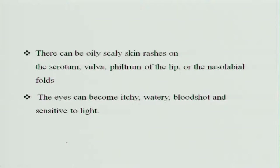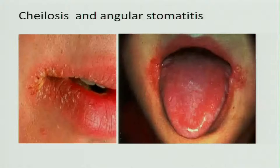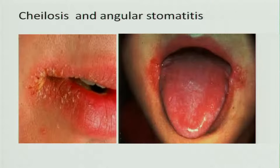There can be oily, scaly skin rashes in the scrotum, vulva, philtrum of the lip, and the nasolabial folds. The eyes can become itchy, watery, bloodshot, and sensitive to light. This is how the cracked lips look — called chelosis — and you can see all these cracks. The tongue also has cracks and starts bleeding.